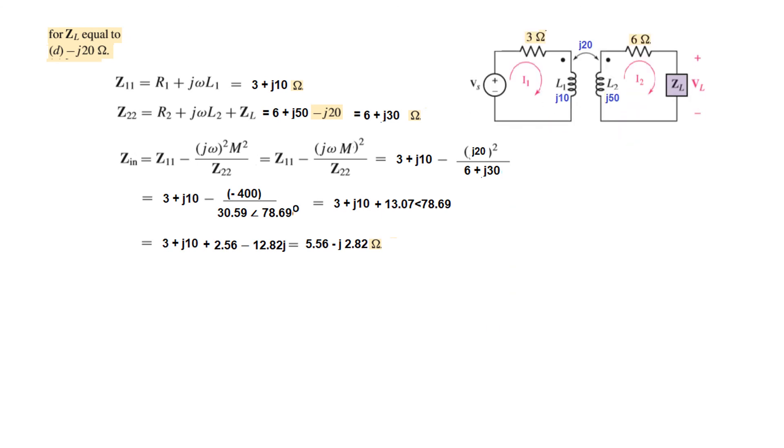Lastly, when ZL is minus j20, we plug in the value minus j20 and exactly follow the same procedure. This is the answer.